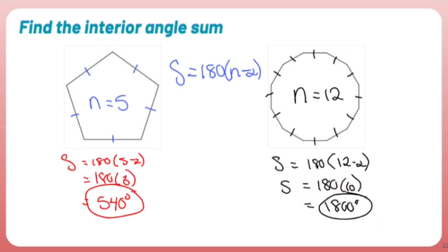Okay? So there you have it. Interior angle sum of the polygon. Pretty simple formula to use. Dunzo.